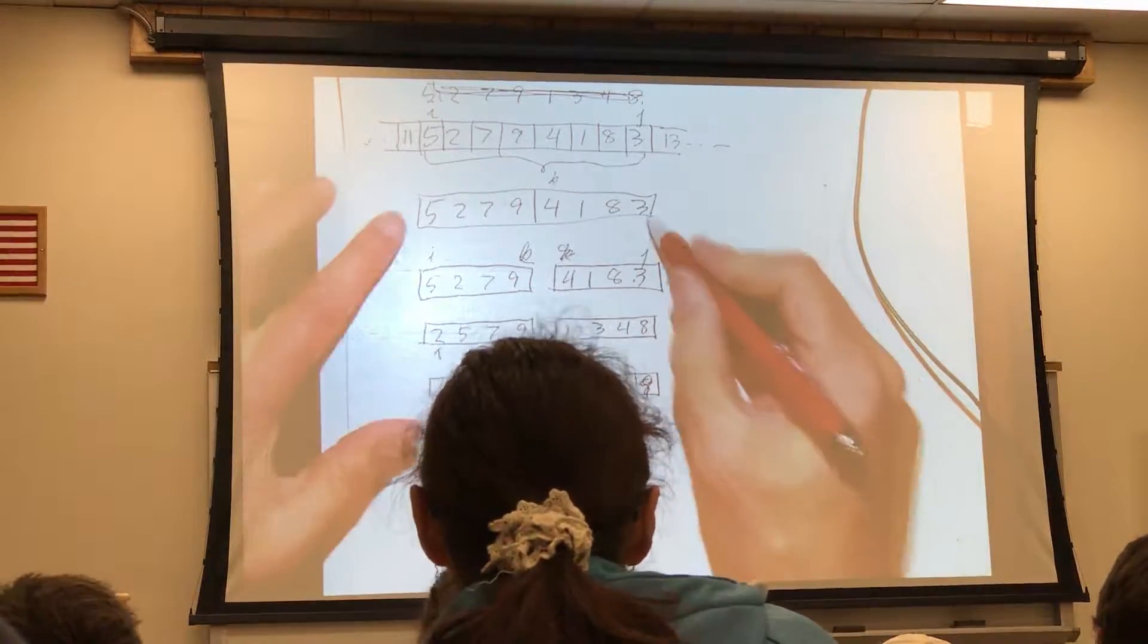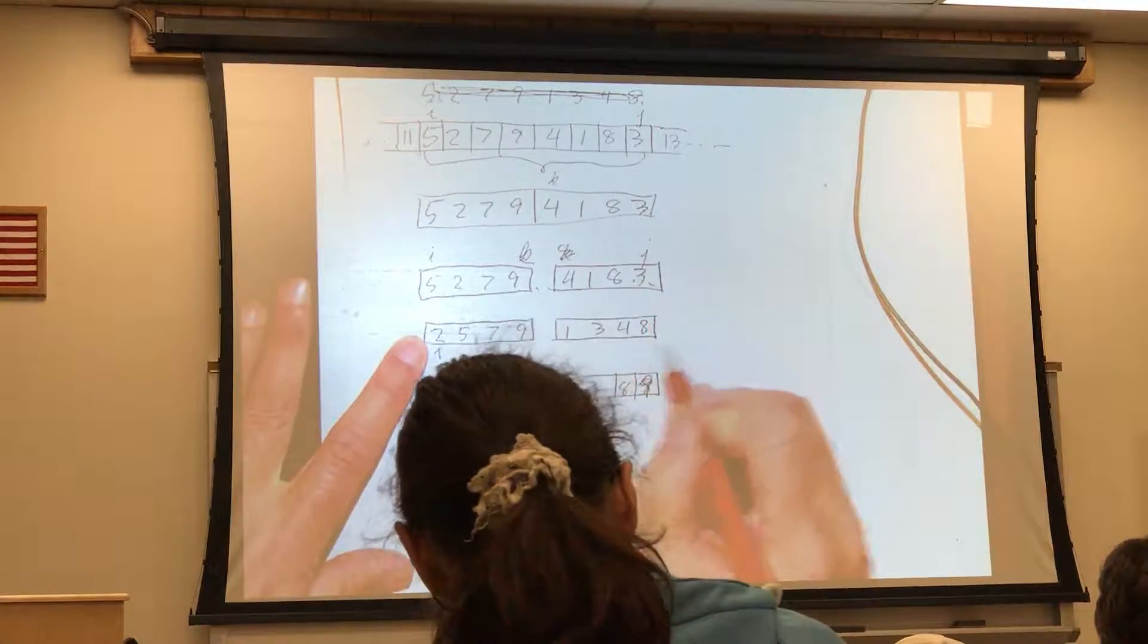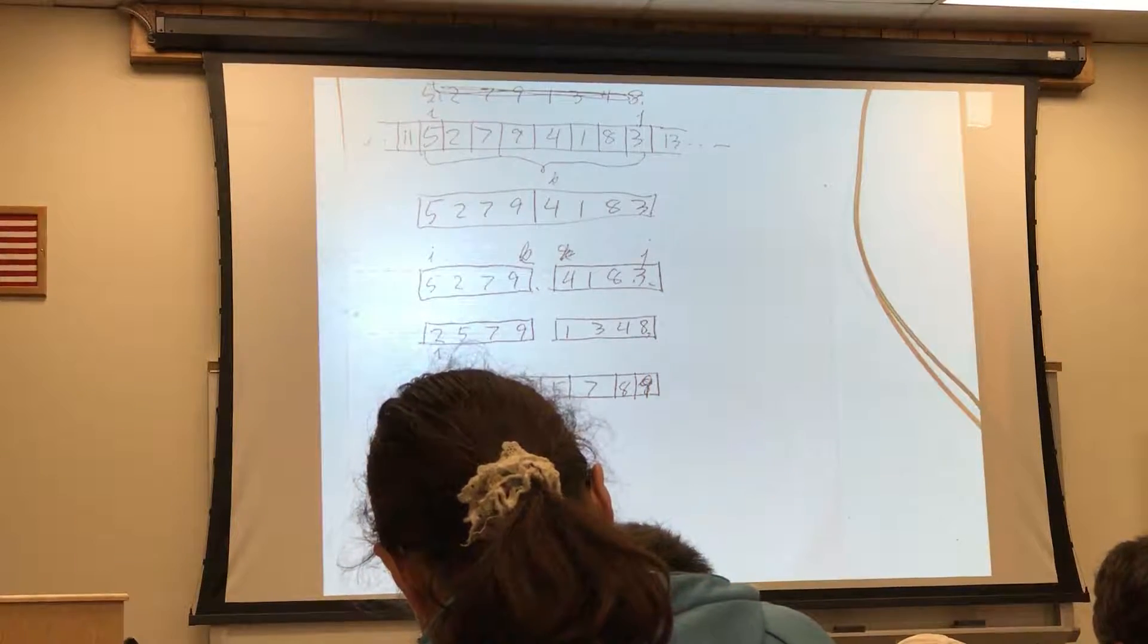Okay so we start with this, two recursive calls, we assume by induction that they do what they're supposed to, that's what we see here, and then we collate.